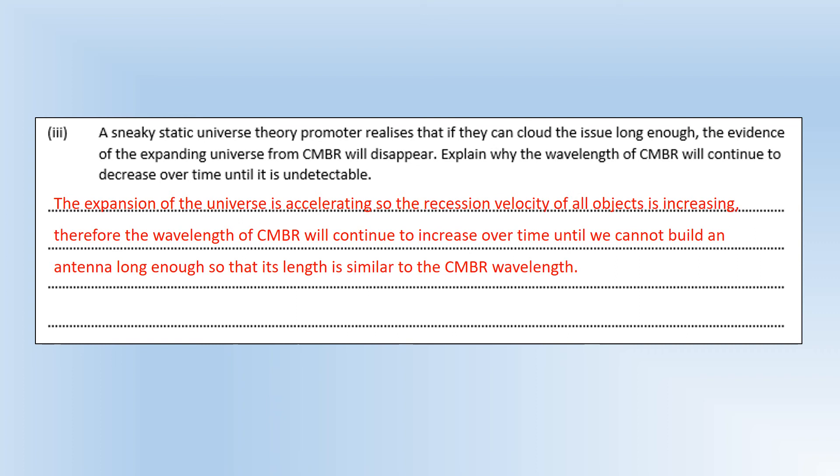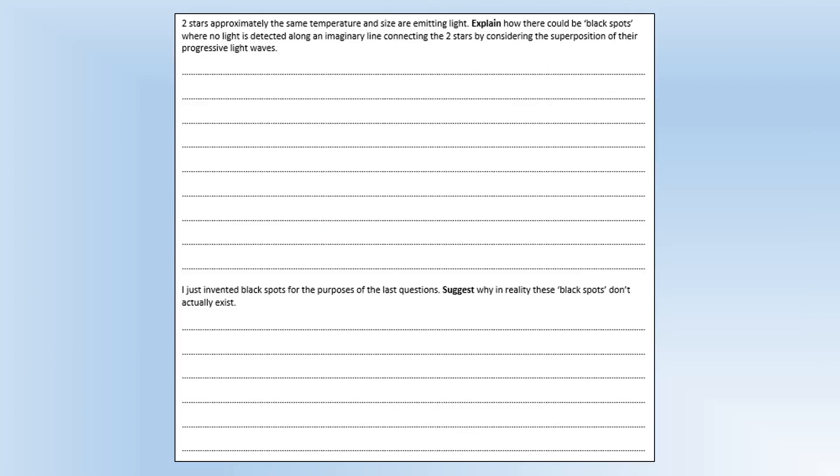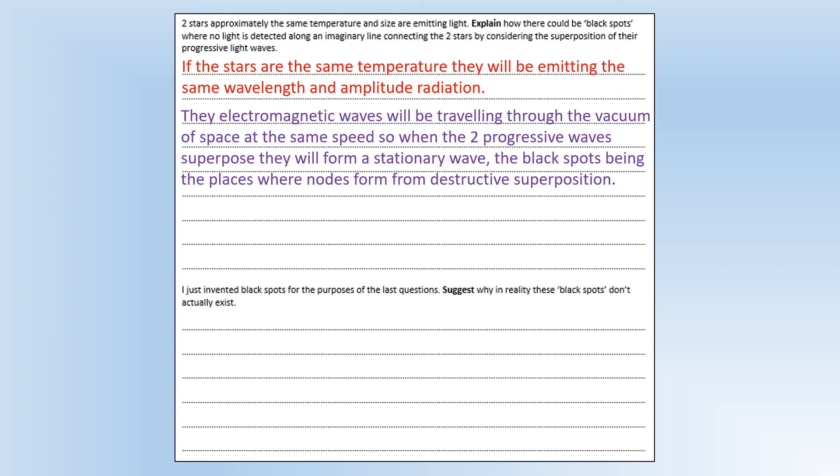So that would be a very sneaky trick but it would actually technically work. Okay, so two stars approximately the same temperature and size are emitting light. Explain how there could be black spots when no light is detected along an imaginary line connecting the two stars by considering the superposition of their progressive light waves. So a way you could in theory get black spots would be, well if the stars are the same temperature they'll be emitting the same maximum intensity wavelength and probably about the same amplitude. And that means that if they're traveling in opposite directions at the same speed, the two progressive waves would superpose to form a stationary wave, the black spots being the place where nodes form from destructive superposition. So that's theoretically how we could create these black spots.